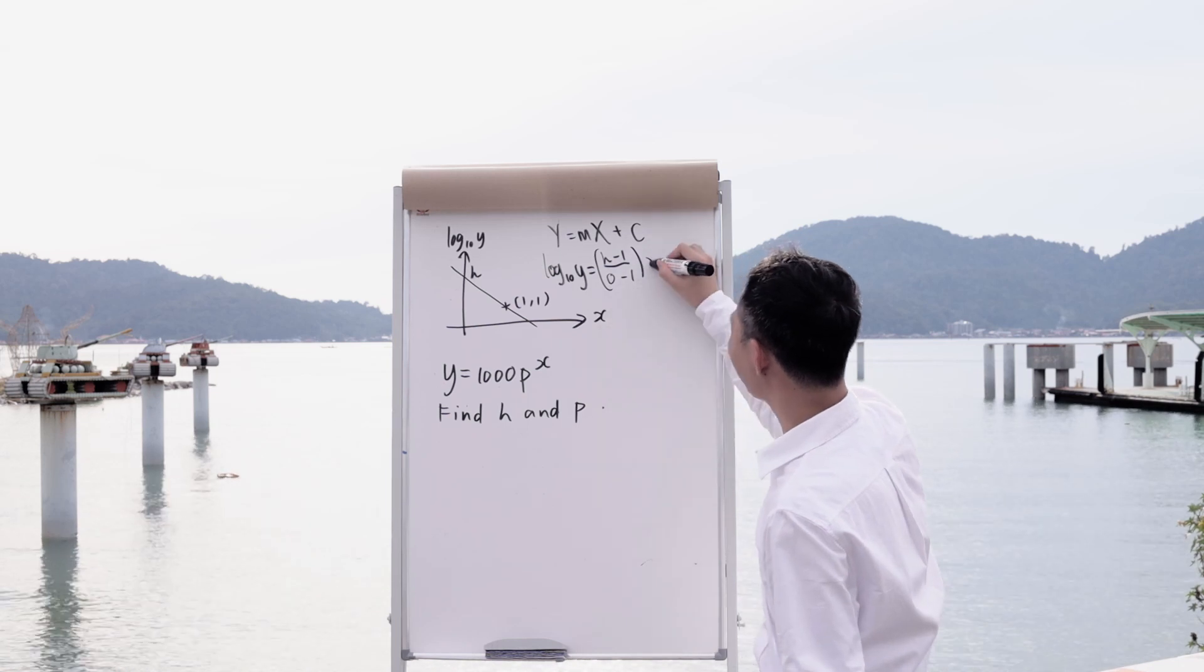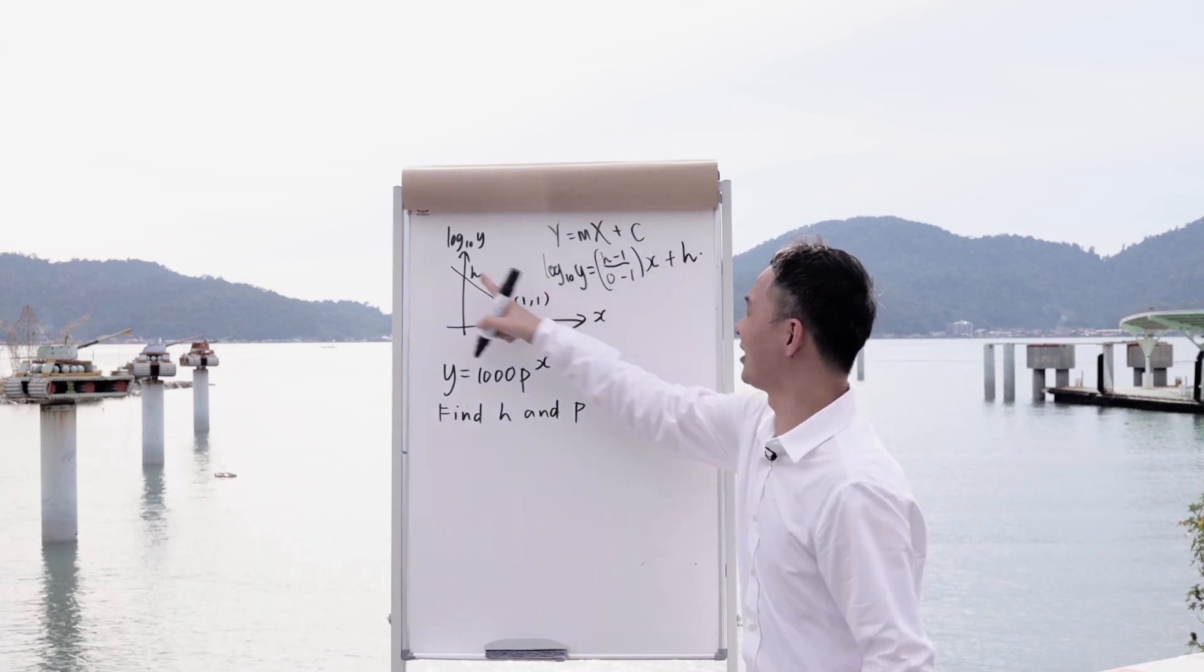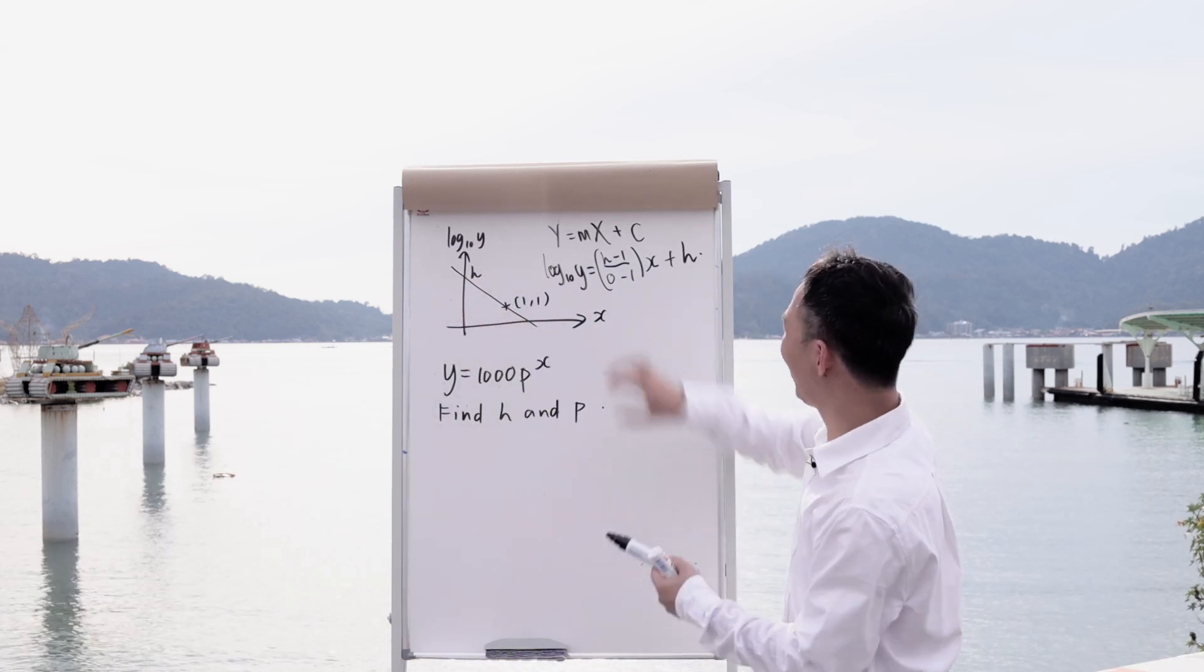And what is my x? My x is just x and c will be just h, isn't it? Because c will be the y-intercept which is h in this case. Alright, and so right now I will have this equation.